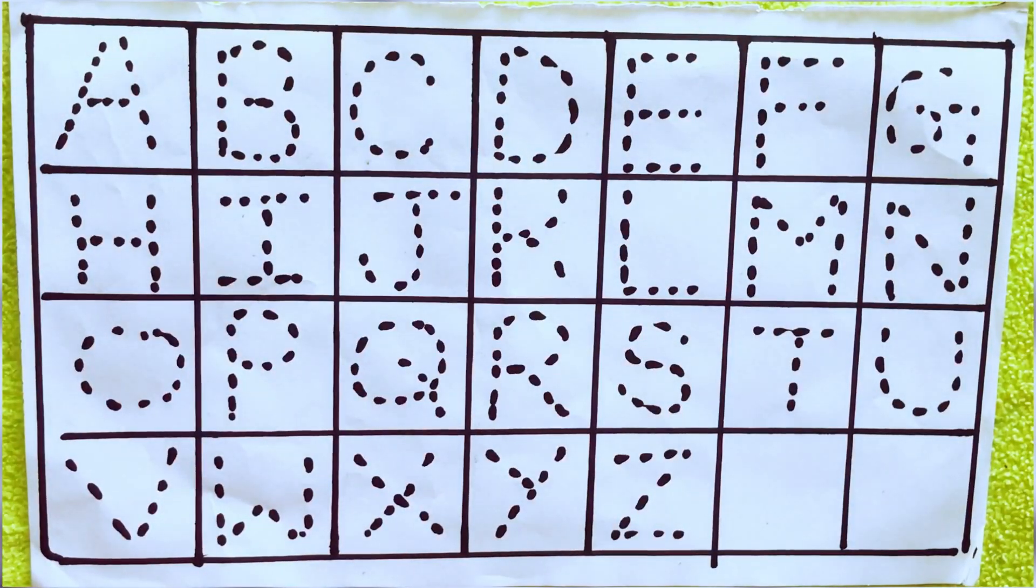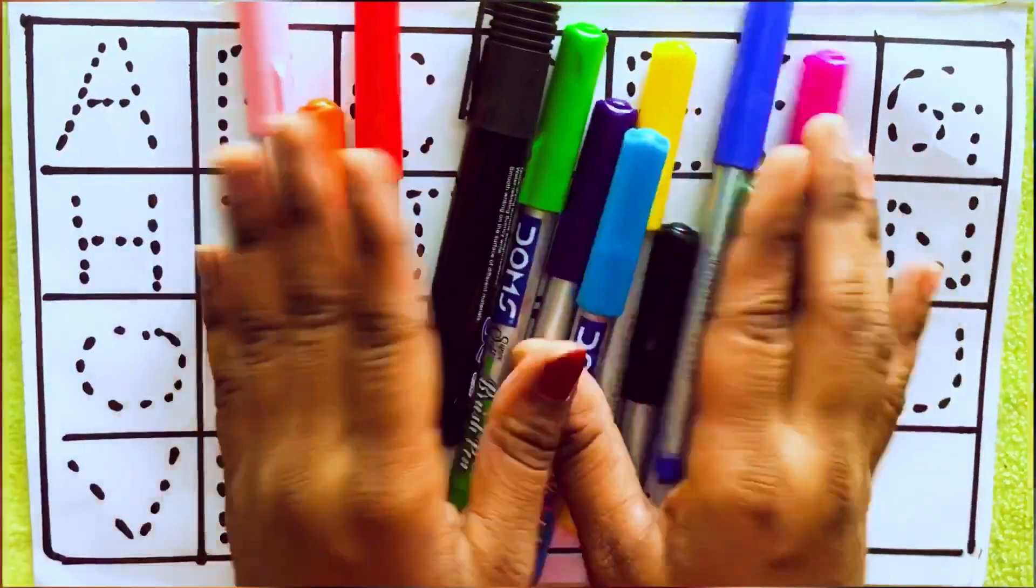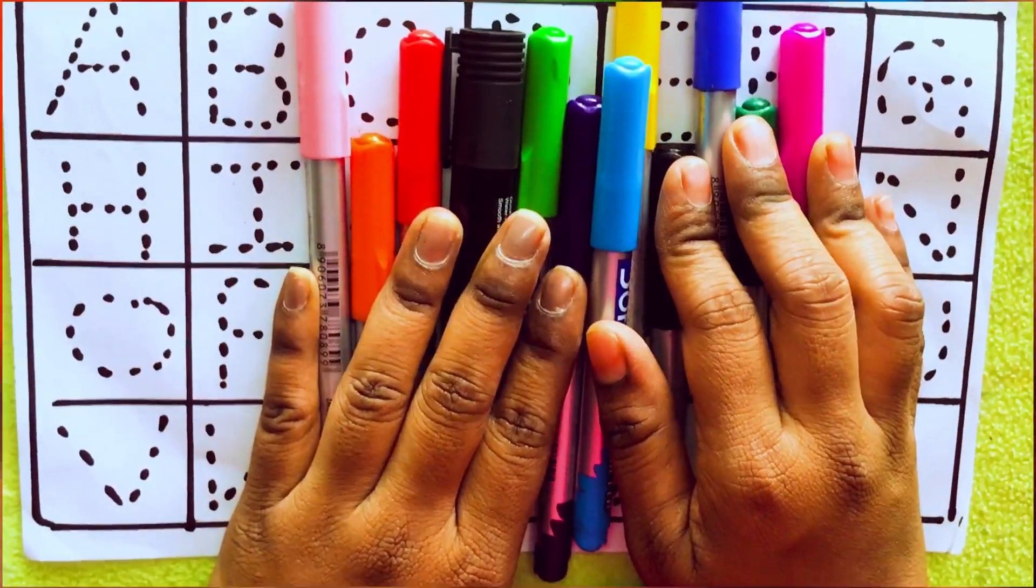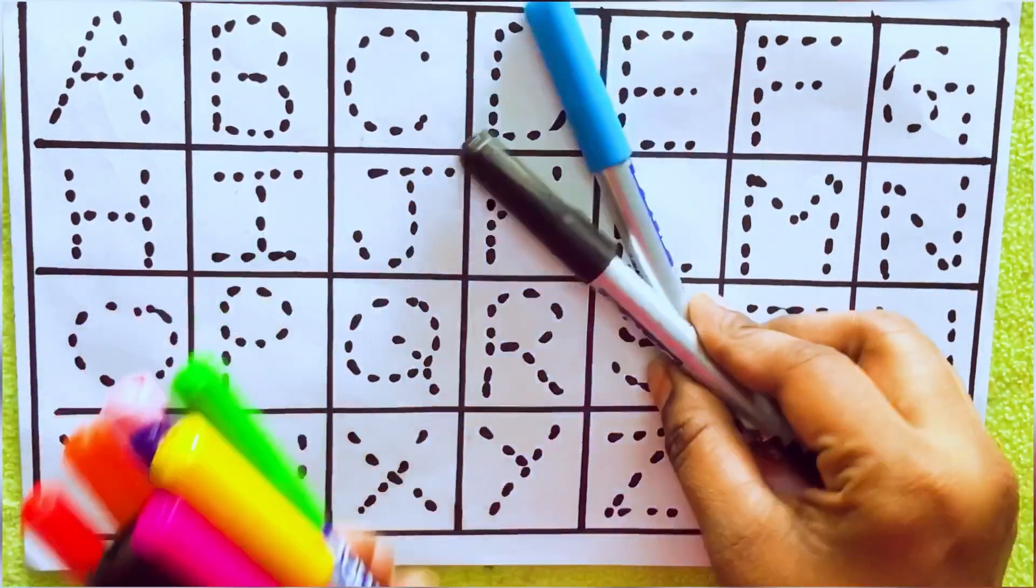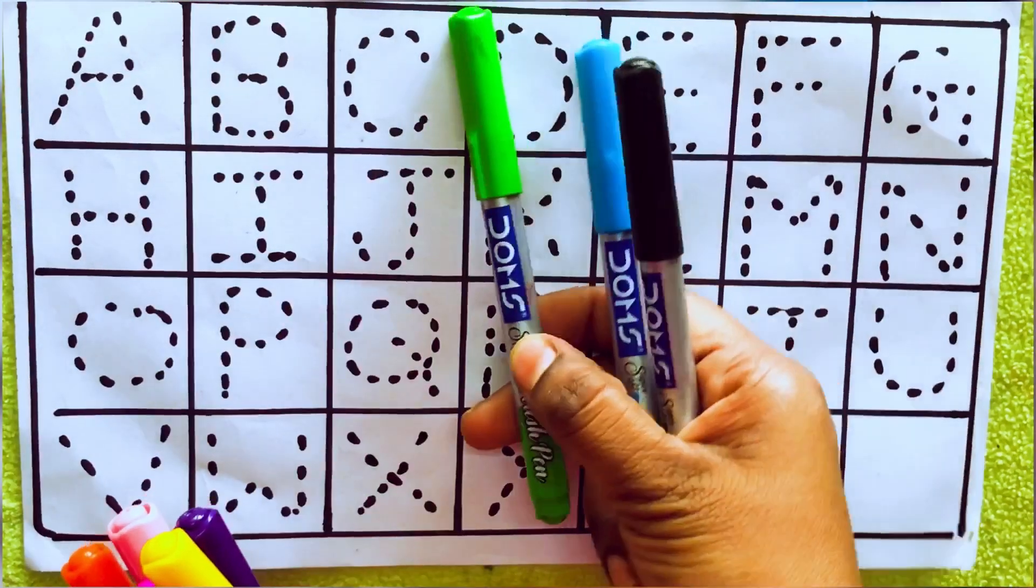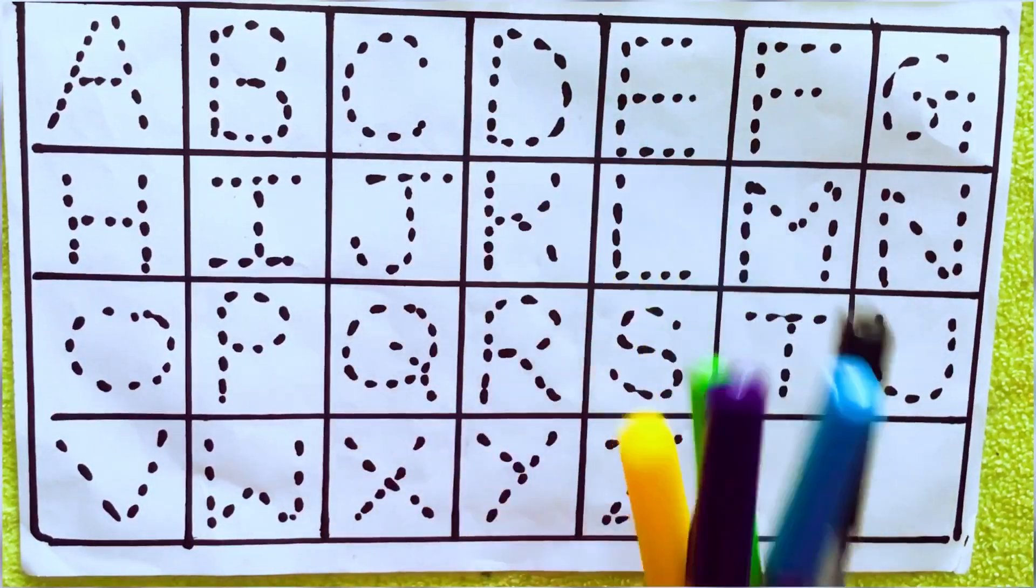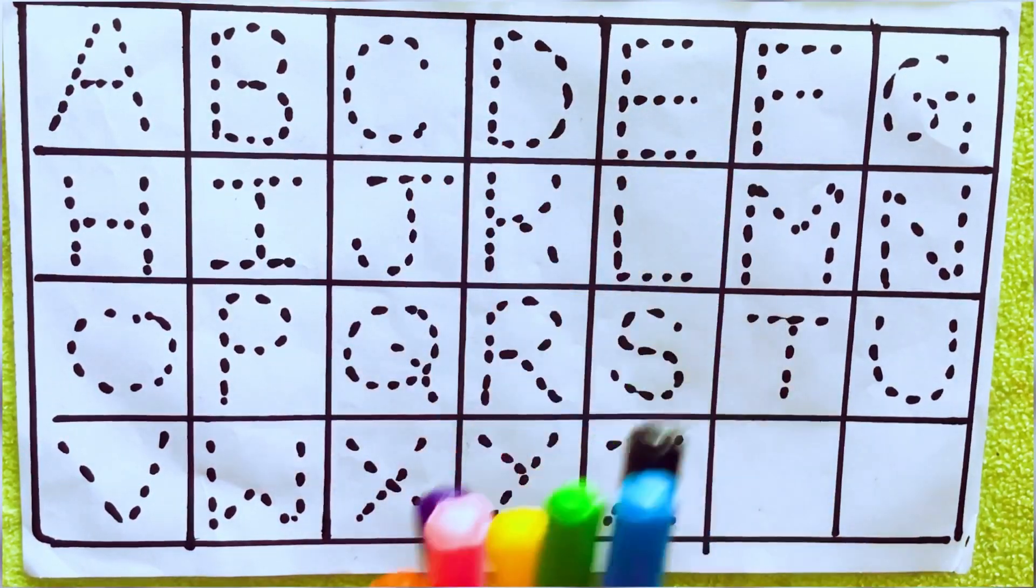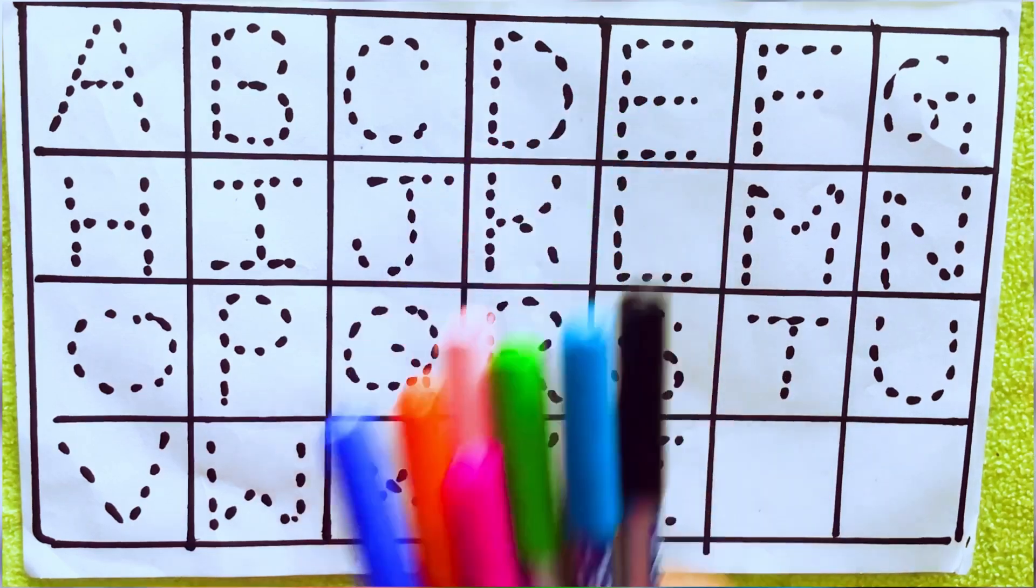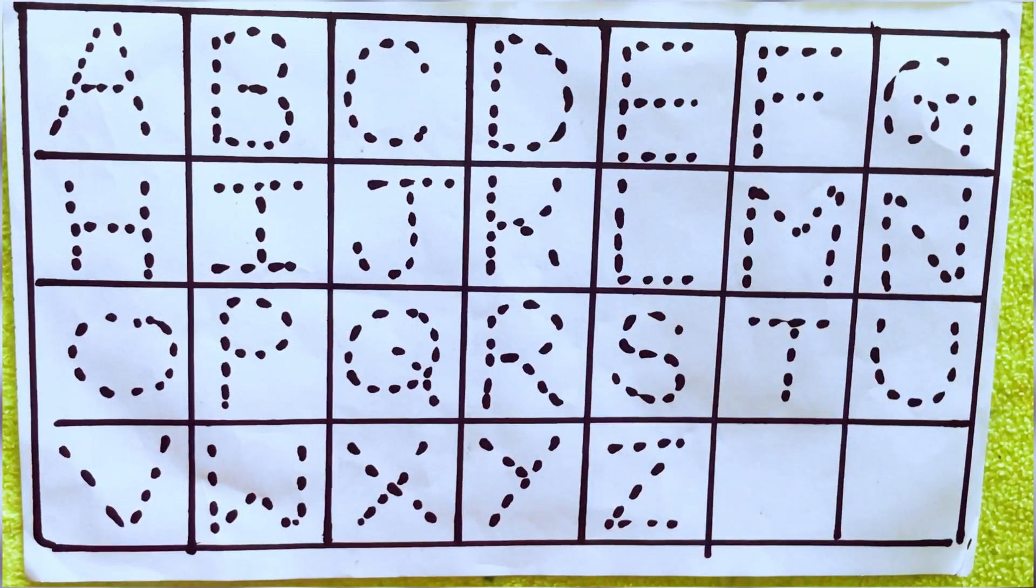Hi kids, how are you? Welcome to our channel. Today we are going to learn alphabets A to Z. Let's learn some colors. These are all our color pencils. Let's learn the names: black color, sky blue color, light green color, yellow color, violet color, pink color, light pink color, orange color, blue color, red color, and green color.